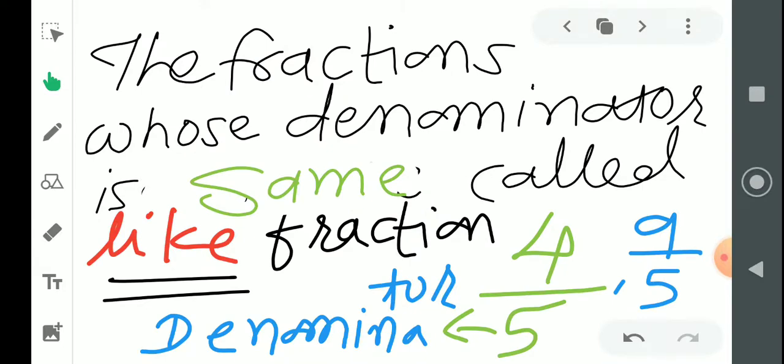Students, let's understand the definition of like fractions and unlike fractions. Like fractions are fractions whose denominators are the same. The fractions whose denominator is the same are called like fractions.